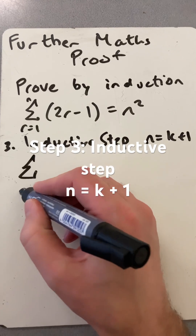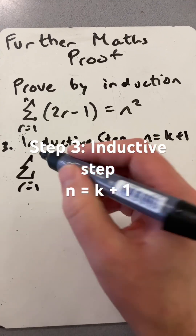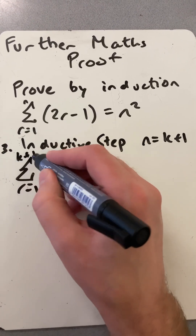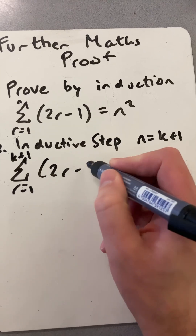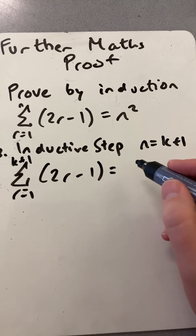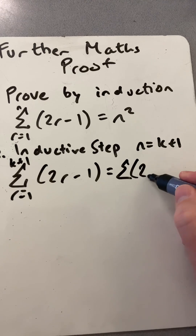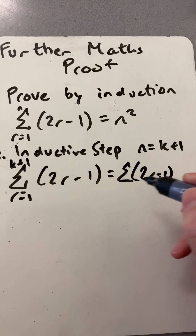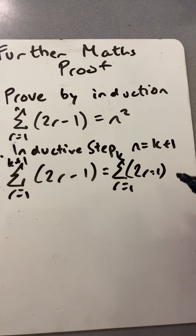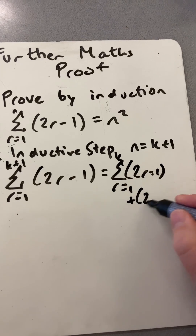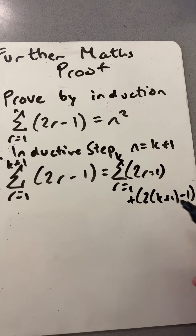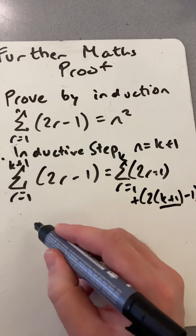So we change where we're summing to. Instead of n, we've got the sum to k plus 1 of 2r minus 1. And that now equals the original statement we had — the sum from r equal to 1 to k — plus an extra term where I've put k plus 1 in for that extra term.